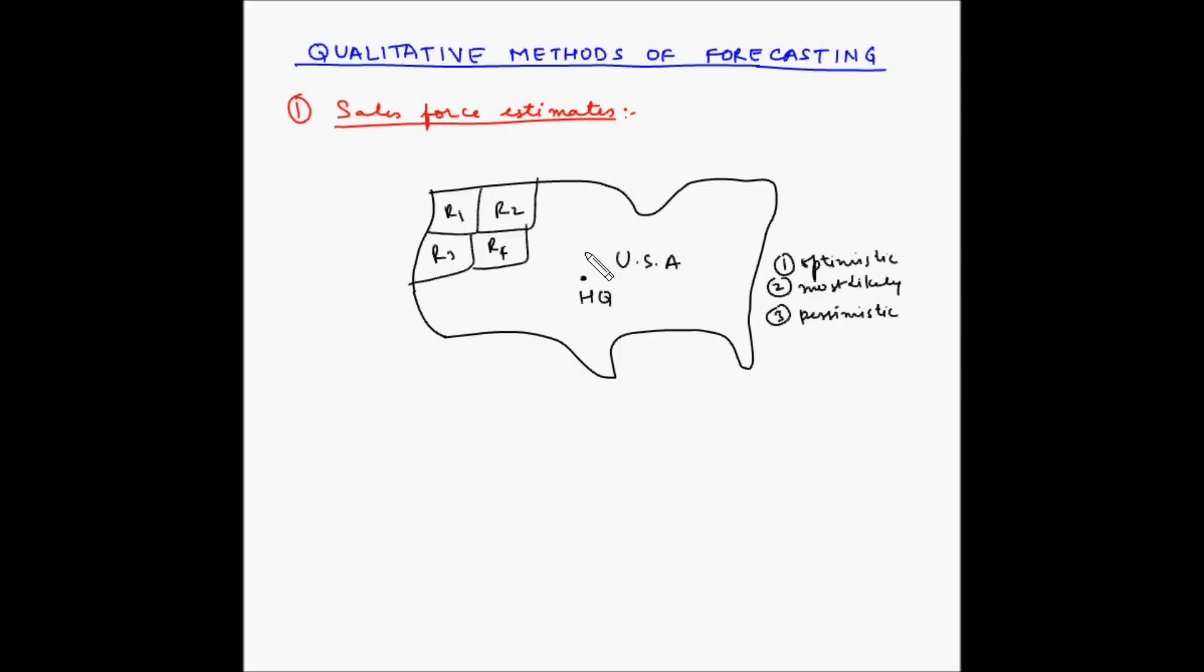Now, this technique has its disadvantages too. As this technique relies on the judgment of the sales people, the individual biases of the sales people may affect the forecast. The sales people may also mistake a customer's wish list as a necessary need. Also, if the performance appraisals of sales personnel is linked with achieving sales targets, they may give lower predictions of demand in order to easily achieve those targets and make their performance look better.